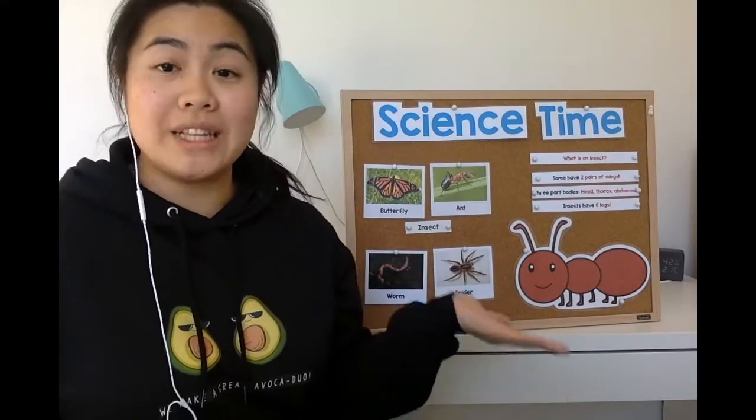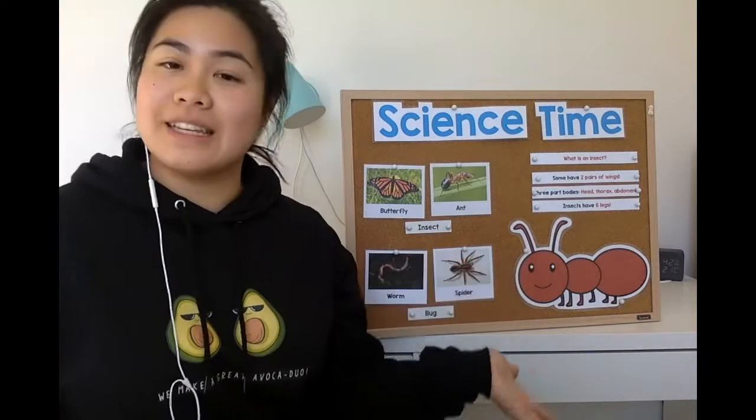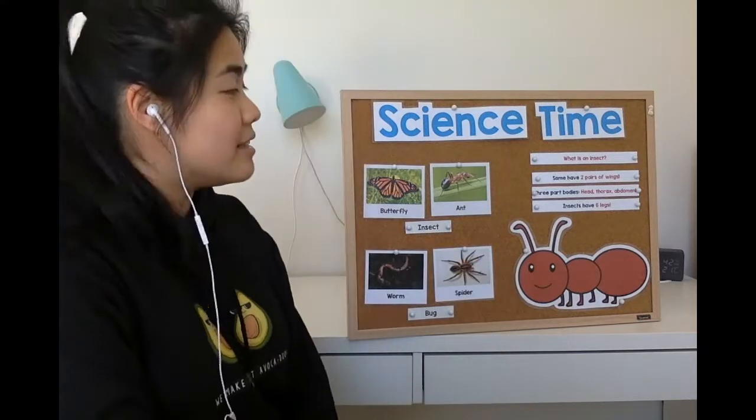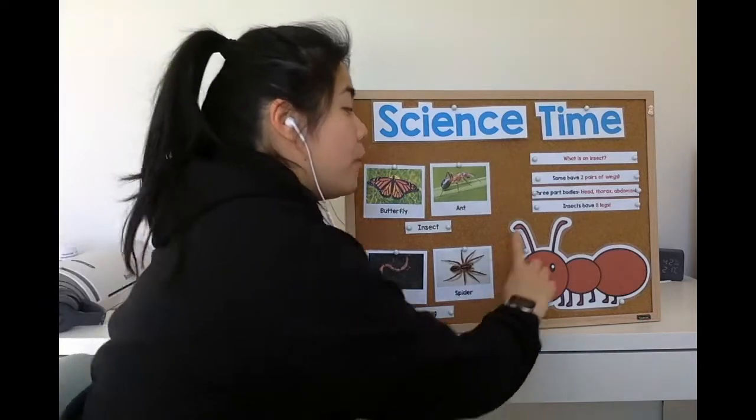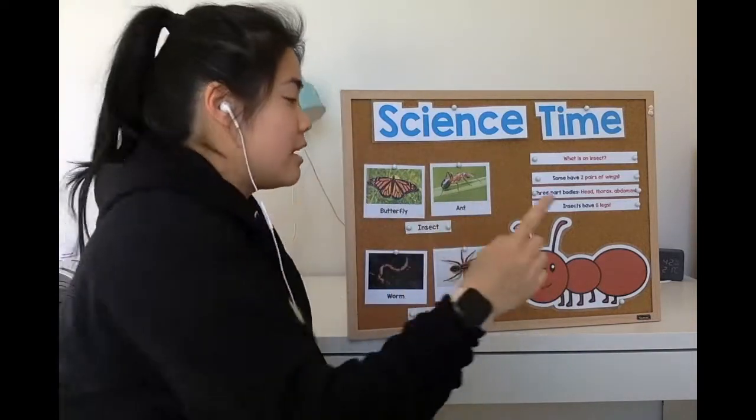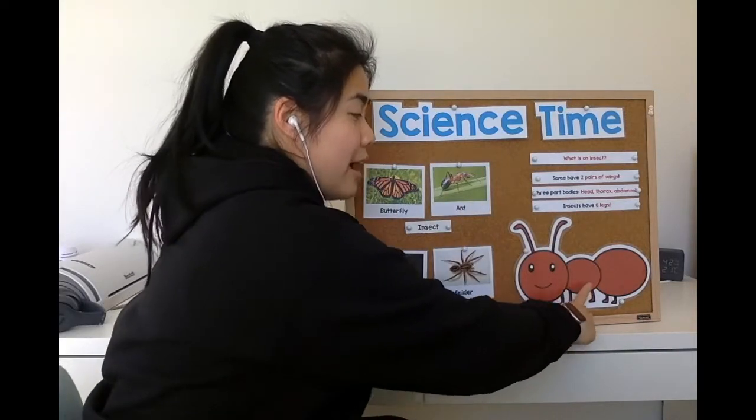So first we need to know what is an insect? What makes an insect an insect? Insects have three parts to their body. That's the head, the thorax, and the abdomen.